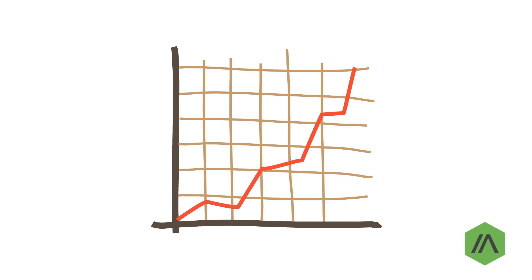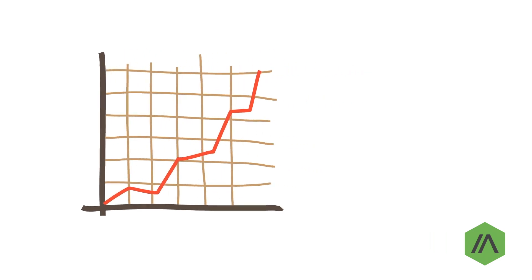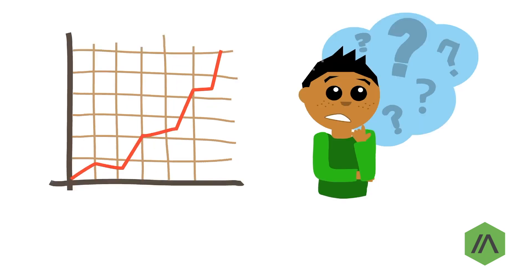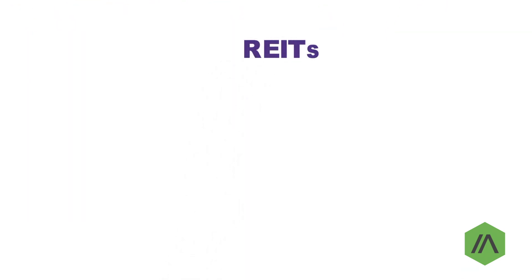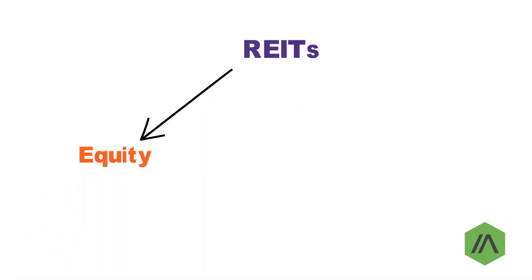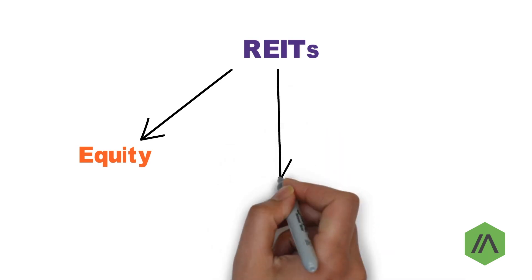So, how do you start investing in REITs? It is important to first determine what type of REITs you want to invest in. There are mainly three types, depending on the way they generate their income. Number one: equity REITs. Equity REITs are the most common type, and they generate their revenue from renting rather than selling the properties.